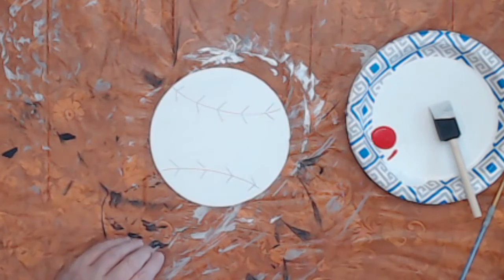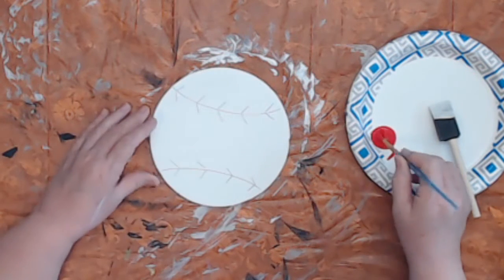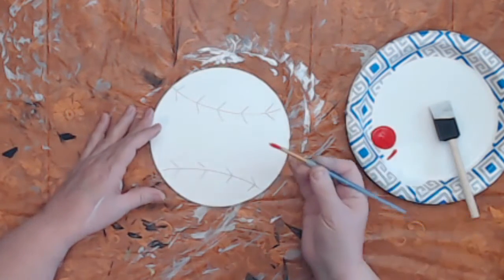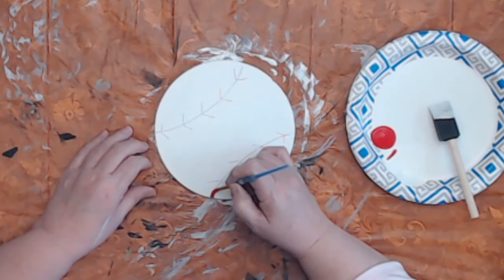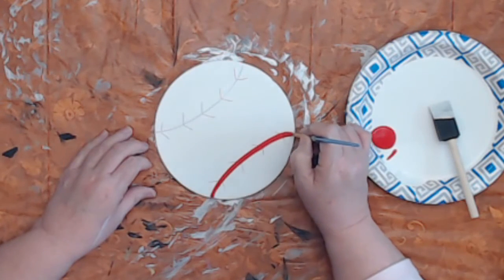Okay, so there you can already see a baseball coming through. So I'm just going to take my paint and I'm going to just paint the lines.